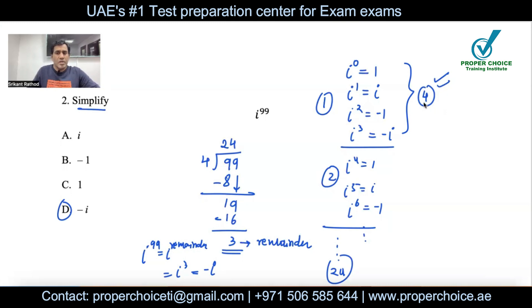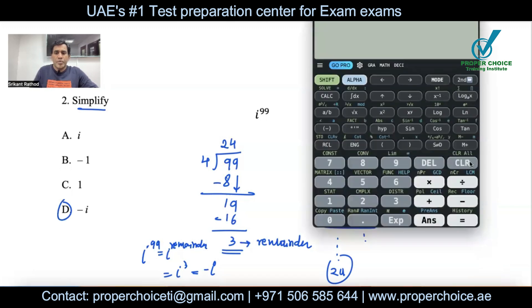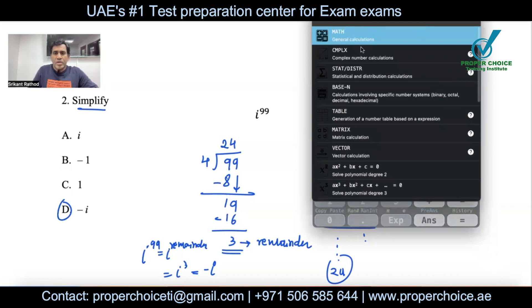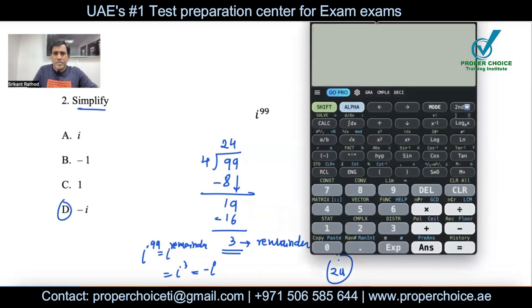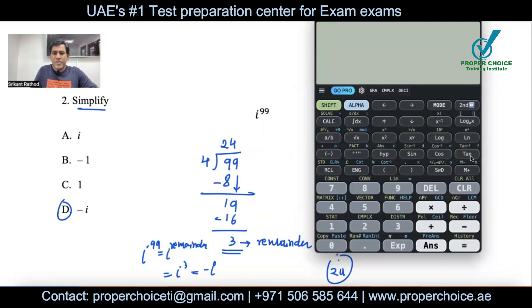You must memorize i^0 through i^3. If your calculator allows it, you can just type i^99 in complex mode and get the answer directly. I'll demonstrate — I press Mode, switch to Complex, then type i to the power 99, and the answer is negative i. Some calculators show this directly, but if yours doesn't, you have to follow the remainder method.